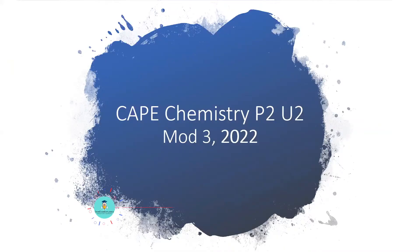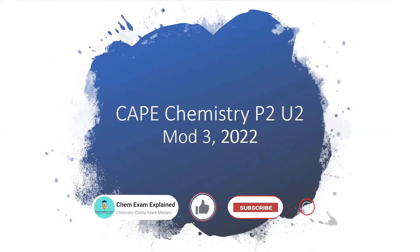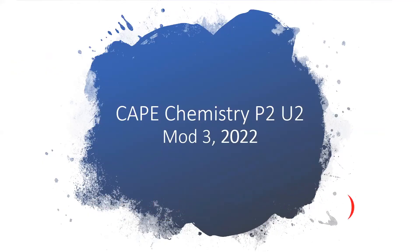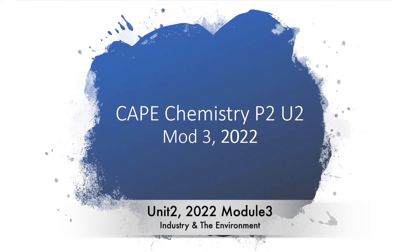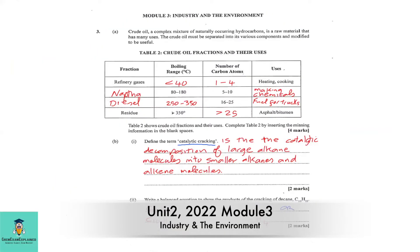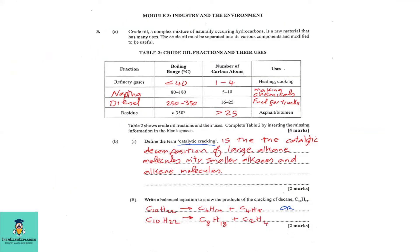Welcome back to Chem Exam Explained, where the aim is chemistry clarity and exam mastery. In today's video we will be looking at CAPE Chemistry Unit 2, 2022, Module 3: Industry and the Environment.